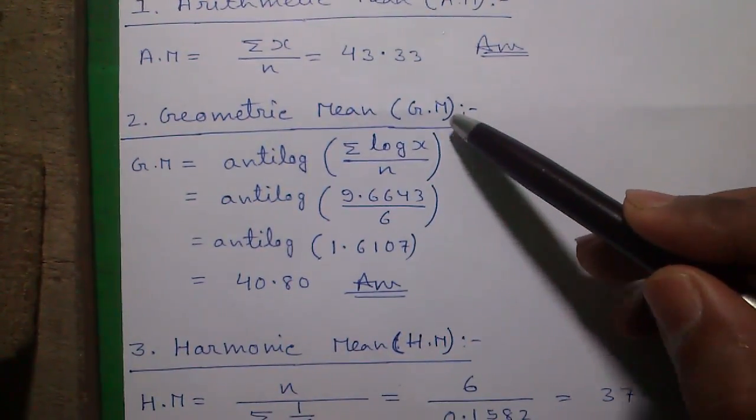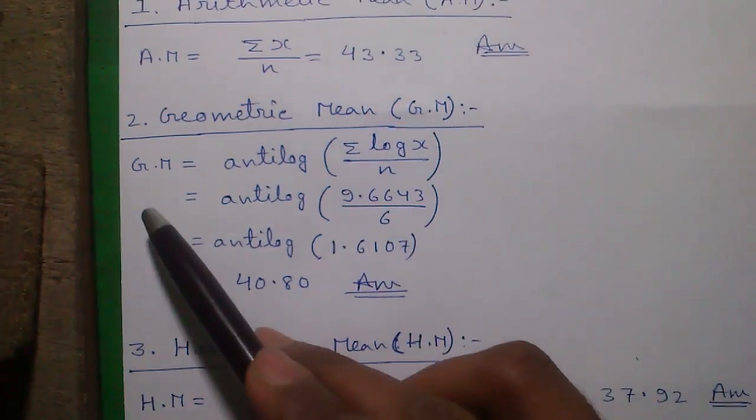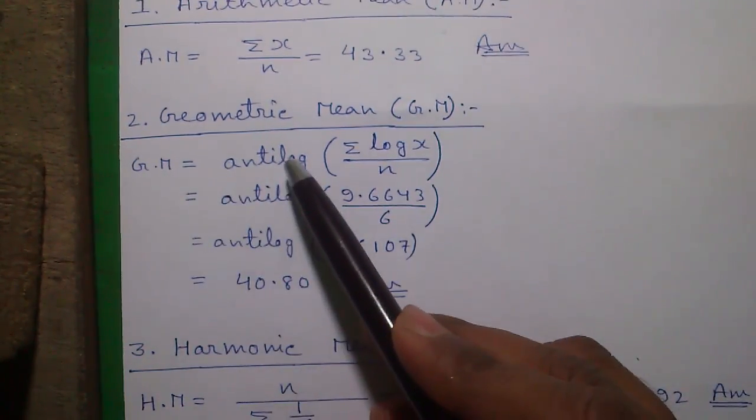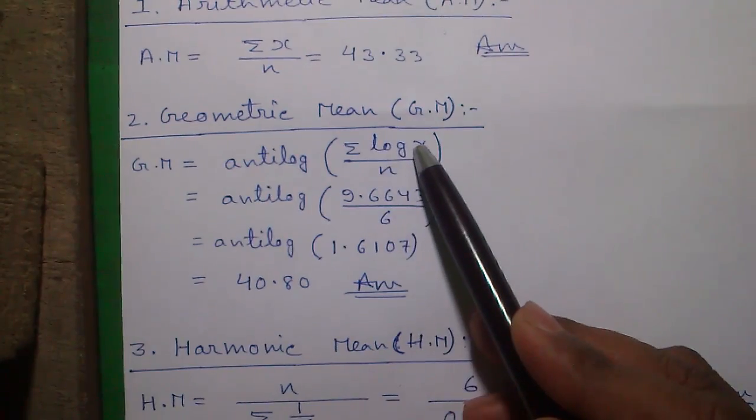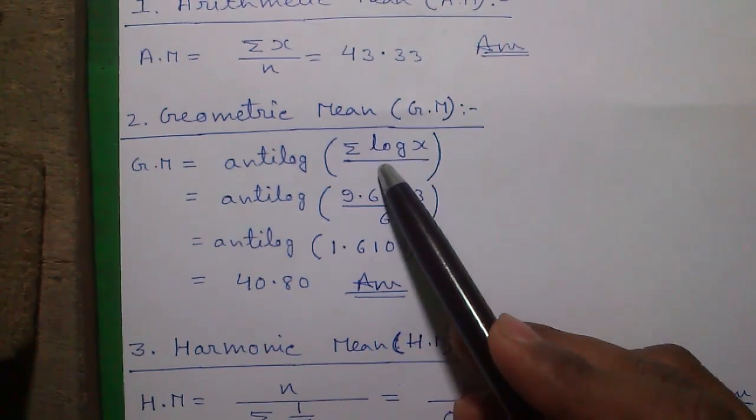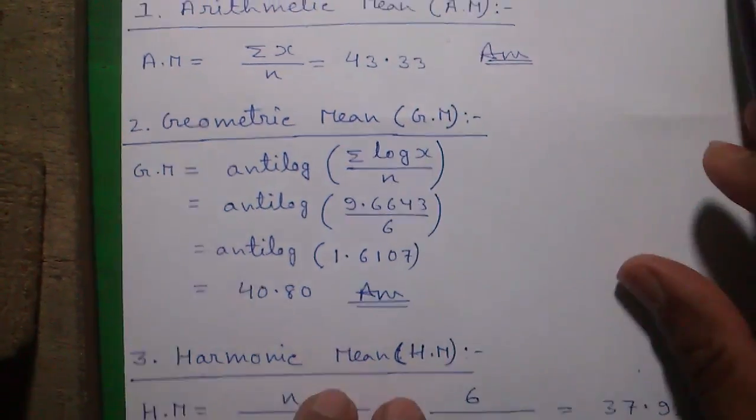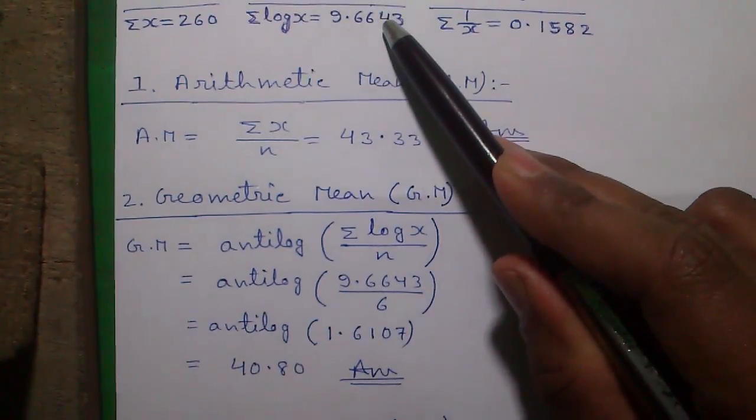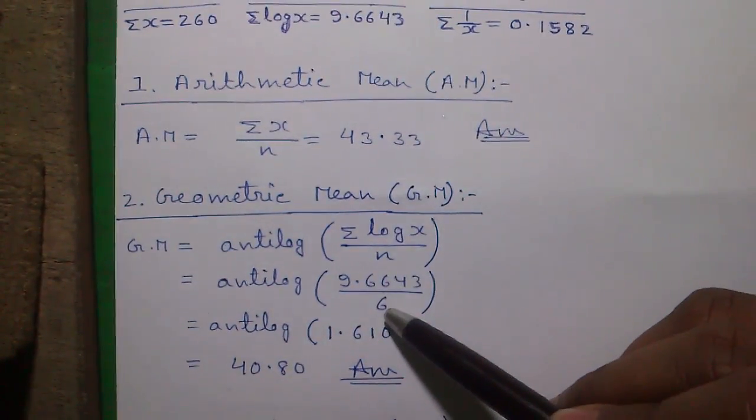Next, the geometric mean. Geometric mean is given by the formula GM equals anti-log of sum of all log x values divided by number of samples. So anti-log of 9.6643 divided by 6, or anti-log of 1.6107, which is equal to 40.80.